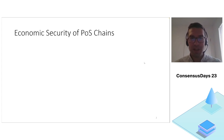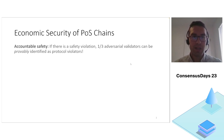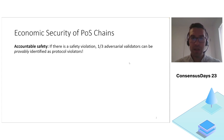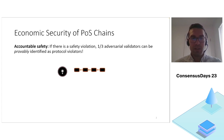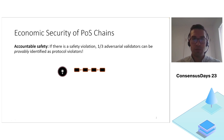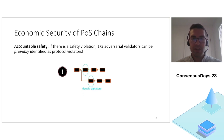Proof of stake blockchains have gained prominence across the blockchain ecosystem and their security is characterized by this notion of accountable safety. Accountable safety states that if there is a safety violation, a third of the validators must be adversarial and these validators can be provably identified as protocol violators. To understand the mechanism, let's consider a proposal-style proof of stake blockchain — in this example, Juno — where clients finalize a block upon observing a quorum of signatures by two-thirds of the validators. Now if clients finalize two conflicting chains of blocks, by inspecting the signatures on these blocks they can identify the validators that have double signed two blocks at the same height, which is a protocol violation.